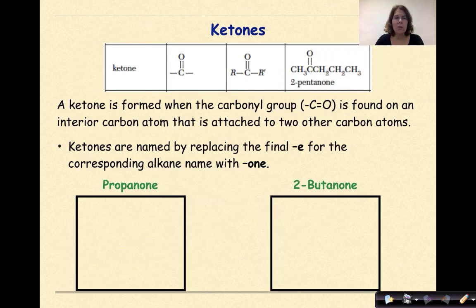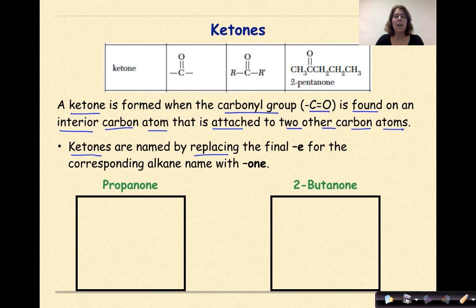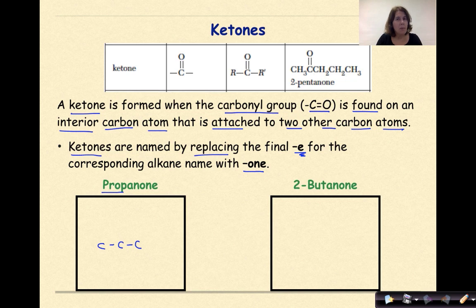Now let's talk about ketones. A ketone is formed when the carbonyl group — C double-bonded O — is found on an interior carbon atom attached to two other carbon atoms. Ketones are named by replacing the final E of the corresponding alkane name with -ONE. You must have at least three carbons for a ketone: with one carbon that would be an aldehyde, and with two carbons it's still always on an end carbon — also an aldehyde. So you must have three carbons for a ketone.